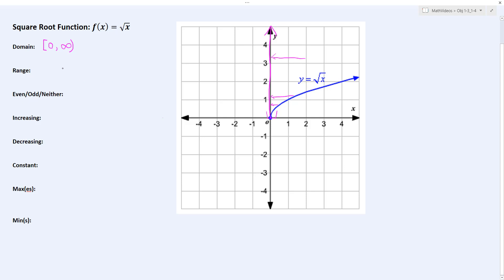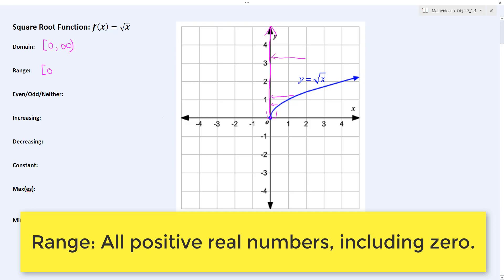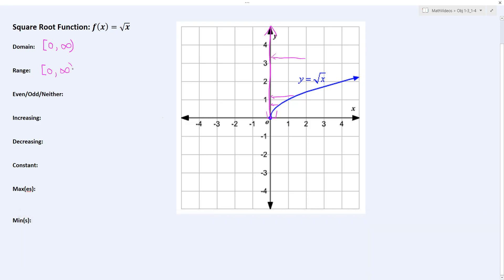The interval is represented by the pink line that starts at 0 and continues out to positive infinity. So we would say the range includes the value of 0, hence the bracket, and goes to positive infinity. So again, it's all positive real numbers.